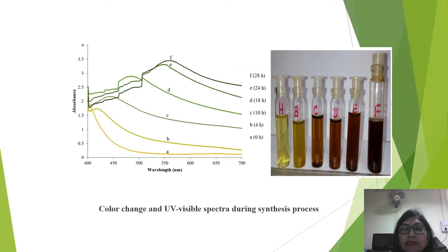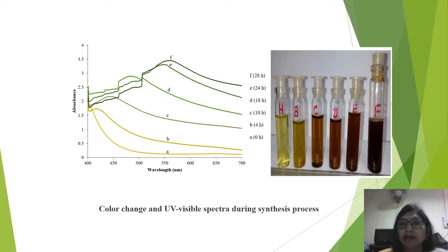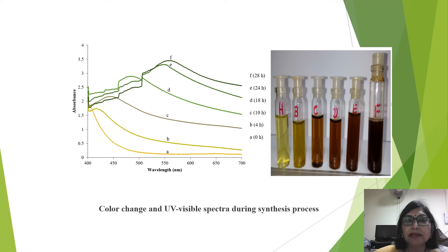This slide shows the colour of the copper nanoparticles changing over time. Finally, dark brown colour indicates the formation of copper nanoparticles. UV-visible spectra also confirm the formation of the copper nanoparticles — as time passes from 0 to 28 hours, the lambda max increases at 560 nanometers, which indicates the formation of the copper nanoparticles.